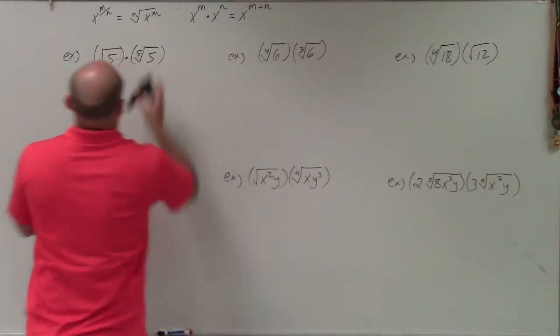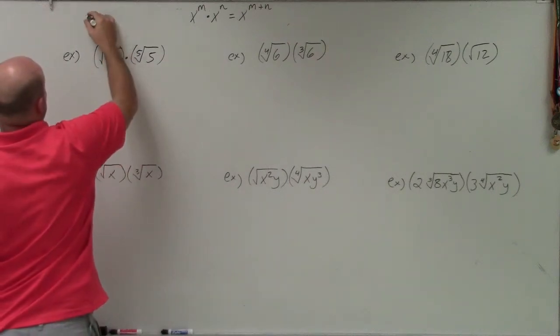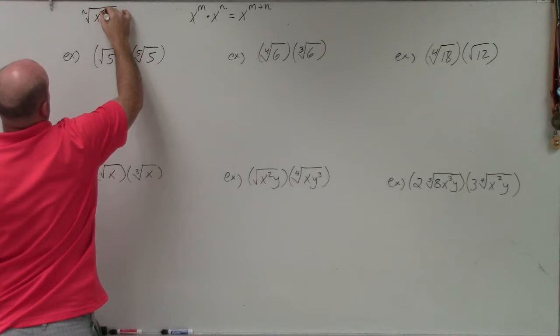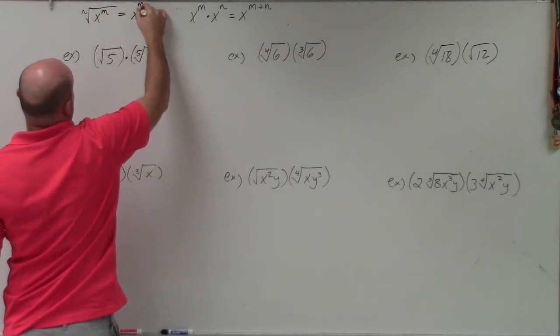So a couple things is, actually I'm going to rewrite this the other way, is understanding radicals to rational powers. So if we have a radical with the nth root of x to the m, we can rewrite that as a rational power as x to the m over n.